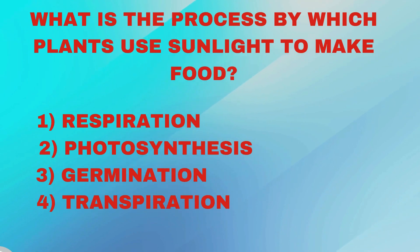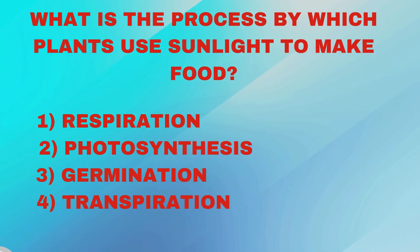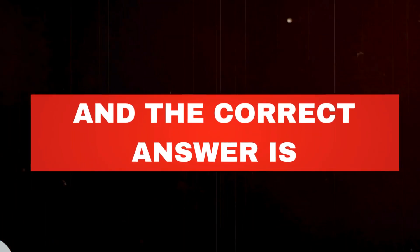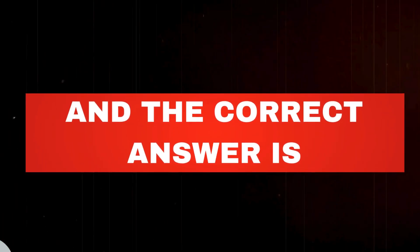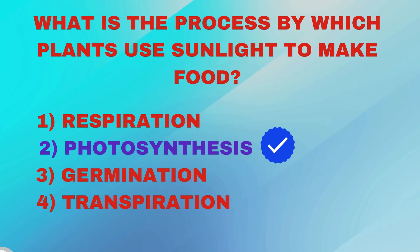What is the process by which plants use sunlight to make food? Respiration, photosynthesis, germination, transpiration? And the correct answer is photosynthesis.